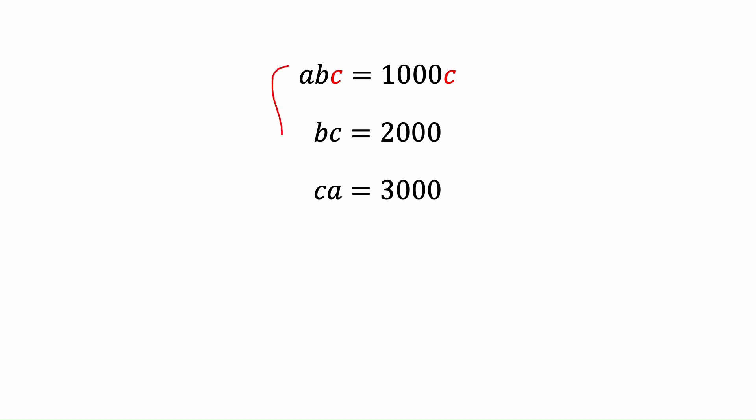If we take a look at all of these three equations, we can make abc from all of them. For the first one we can multiply c to both sides and it's going to be abc equals 1000c. For the second one we can multiply a to both sides so we will have abc equals 2000a. And for the last one we will have abc by multiplying b to both sides.